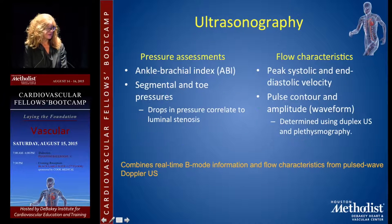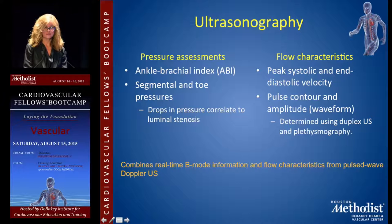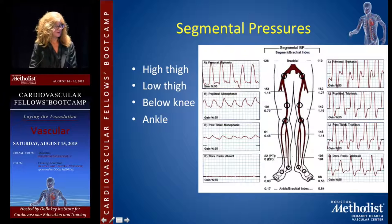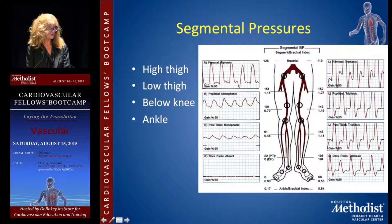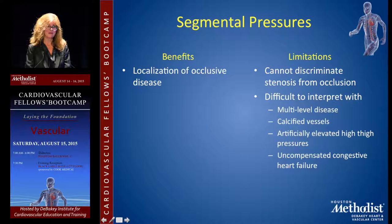Ultrasound provides both physiologic and anatomic information: ABI, segmental pressures, peak systolic velocities, arterial pulse contours, and amplitudes. Segmental pressures can be measured at three or four levels — in our institution we do four: high thigh, low thigh, below knee, and ankle. A difference greater than 20 mmHg from one level to another, or between left and right sides, indicates disease. The high thigh pressure should be greater than 30 mmHg above arm blood pressure — if it's lower, you know there is aortic disease.